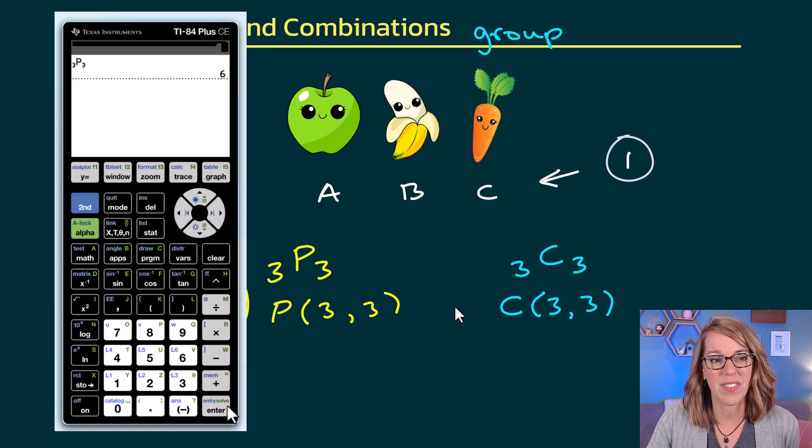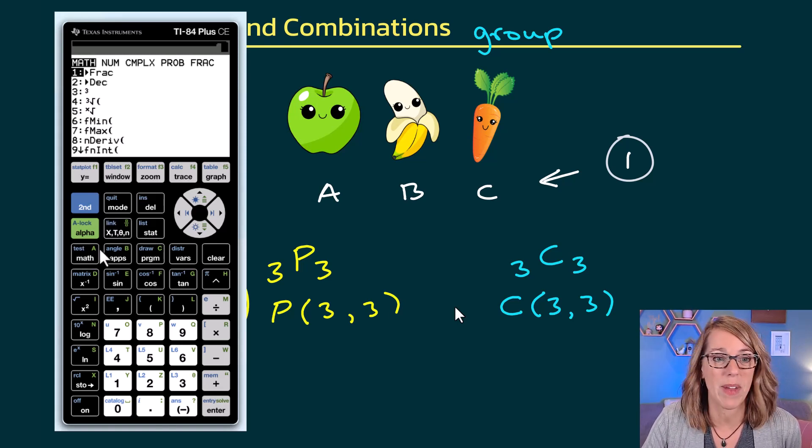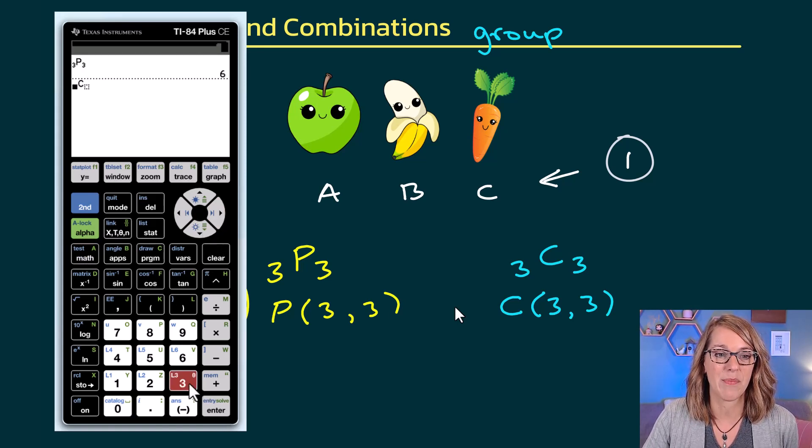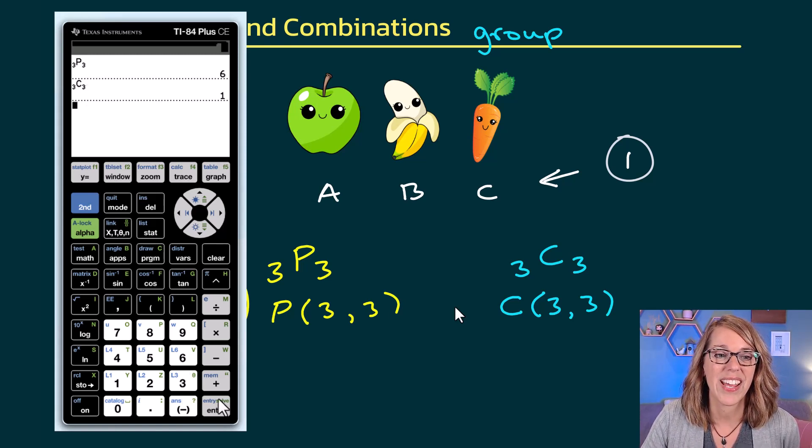Let's do the very same thing for the combination. For the combination, I again go to my math menu. I'm going to arrow over to probability. I'm going to grab the combination, and this time, order does not matter. So I'm going to do 3 choose 3 items, and I end up with just one combination.